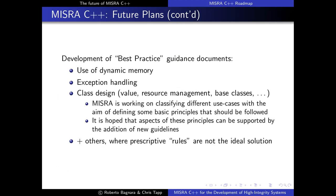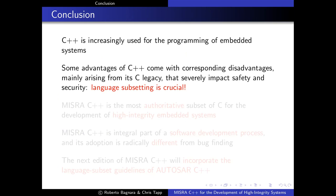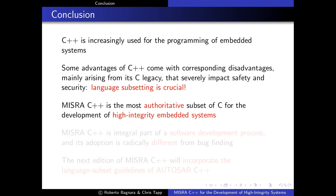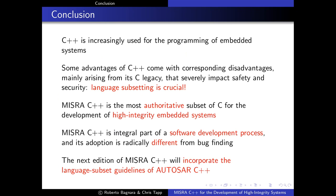In conclusion: C++ is increasingly used for embedded systems programming, though the fast evolution of the language has scared away several players. Some advantages of C++ come with corresponding disadvantages, mainly arising from the C legacy, making language subsetting crucial. MISRA C++ is, in my opinion, the most authoritative subset of C++ for the development of high-integrity embedded systems. MISRA C++ is part of a software development process that has very little to do with bug finding, and the next edition will incorporate concerns addressed by the language subset guidelines of Autosar C++.